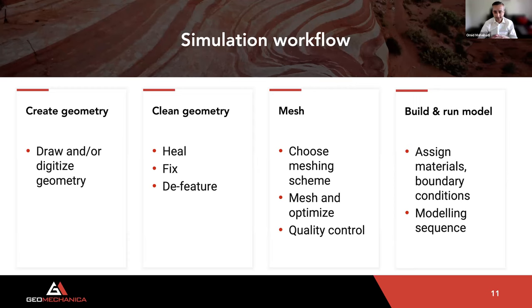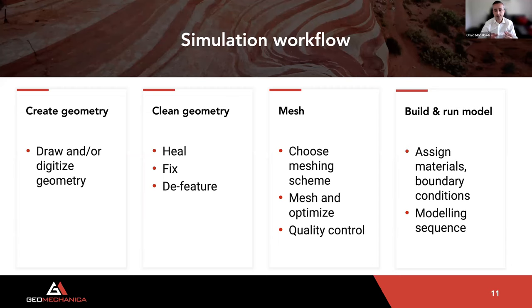When building a model for analysis in Irasu, or in any numerical modeling tool, there are four main steps: first, create the geometry; clean it; mesh it; and build and analyze the model. When you start by creating the geometry you usually draw or digitize it. In many geoengineering applications we are working with natural structures, so we're digitizing the geometry, which means you have to clean it, heal it, fix issues, and make sure it can be meshed. Then you move on to choosing the appropriate meshing scheme, meshing and optimizing that mesh, and performing quality control.